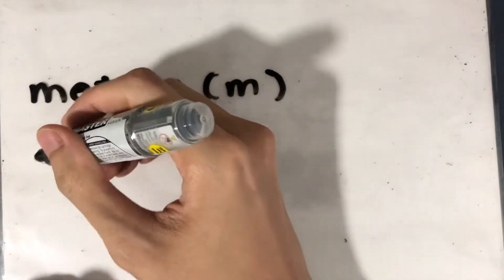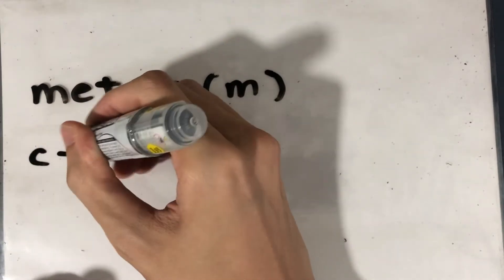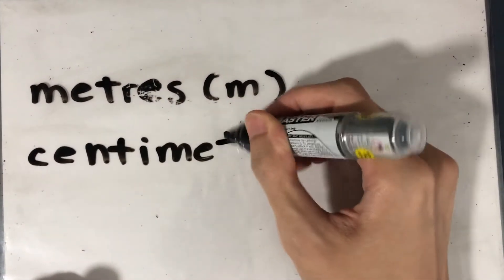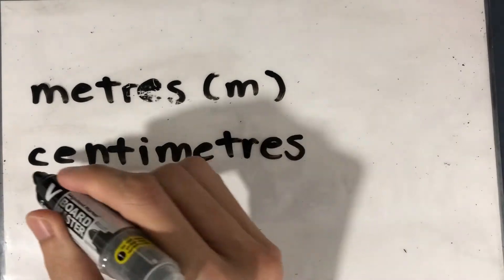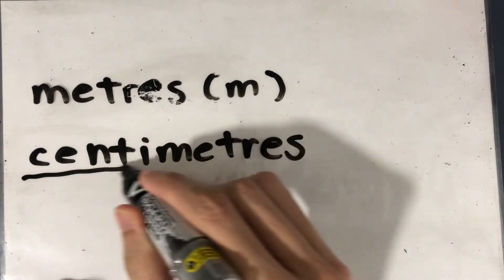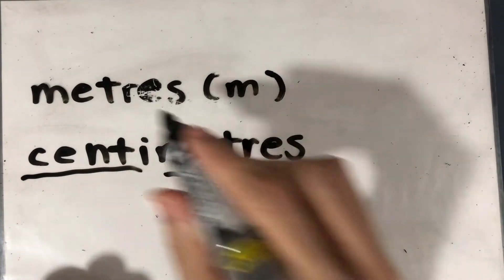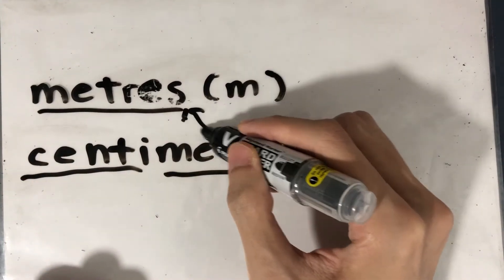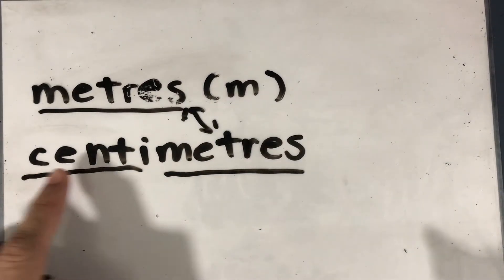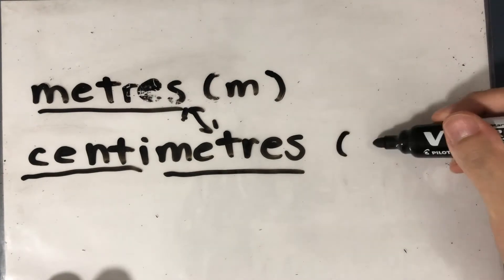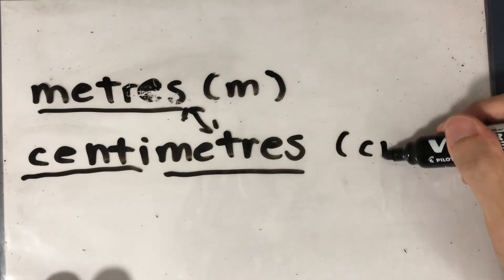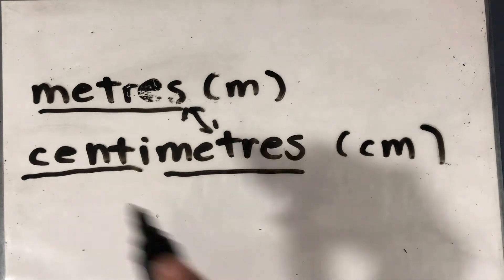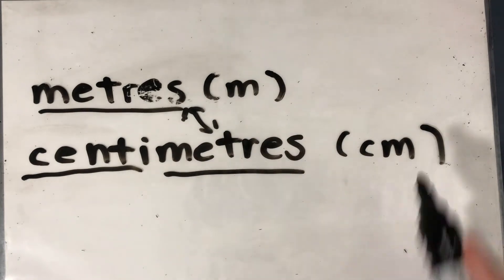Today we are going to learn about a new term, and it's called centimeters. You can see it's made out of two sections: centi and meters. Meters is the same as before — both words share meters. All we have added is centi in front. The short form for centimeters is CM. So, meters is M, centimeters is CM.